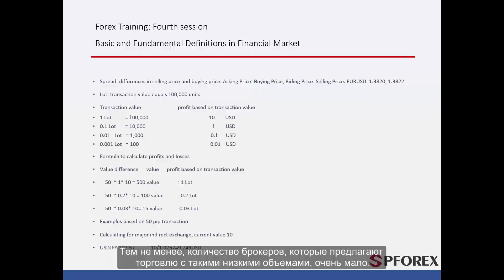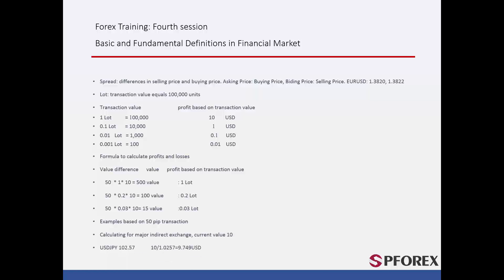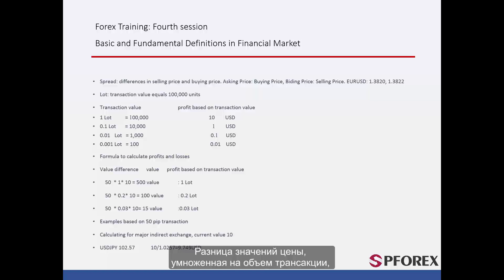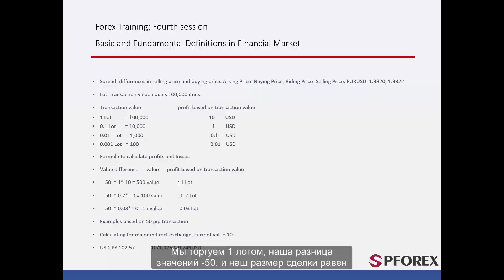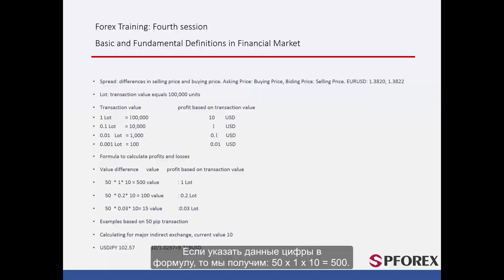However, there are very limited numbers of brokers who offer trades for such a low amount. There is a formula to calculate your gains and losses: the value difference multiplied by the size of transaction multiplied by the net profit per trading value. For better understanding, let's look at examples where our base unit is 50. Example 1: We are trading 1 lot. Our value difference is 50 and our size of transaction is 1 unit. Therefore, for every 1 lot we will gain or lose $10. Applying the formula: 50 times 1 times 10 equals 500.